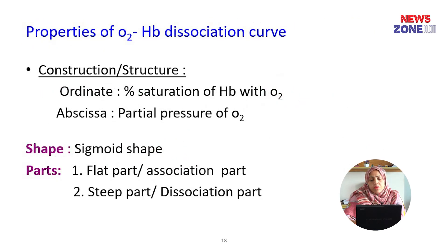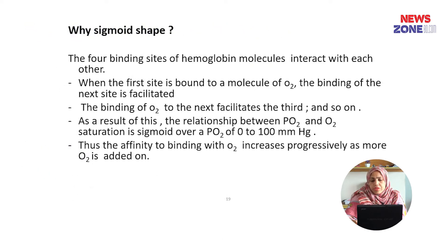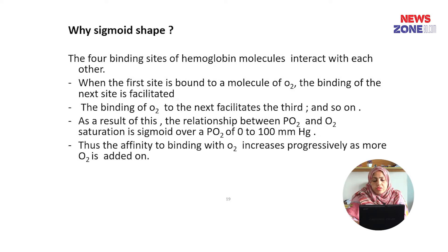The oxyhemoglobin dissociation curve has a flat part (association part) and a steep part (dissociation part), and it is sigmoid in shape. Why is it sigmoid? The hemoglobin molecule has four binding sites. When the first site binds with oxygen, binding of the second site is facilitated; when the second is facilitated, it facilitates the third, and so on. So the affinity for oxygen increases progressively as more oxygen is added.